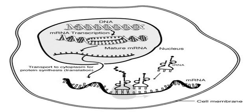Non-eukaryotic mRNA is, in essence, mature upon transcription and requires no processing. Except in rare cases, eukaryotic pre-mRNA requires several processing steps before its transport to the cytoplasm and its translation by the ribosome. The extensive processing of eukaryotic pre-mRNA that leads to the mature mRNA is RNA splicing, a mechanism by which introns are removed and exons are joined together.